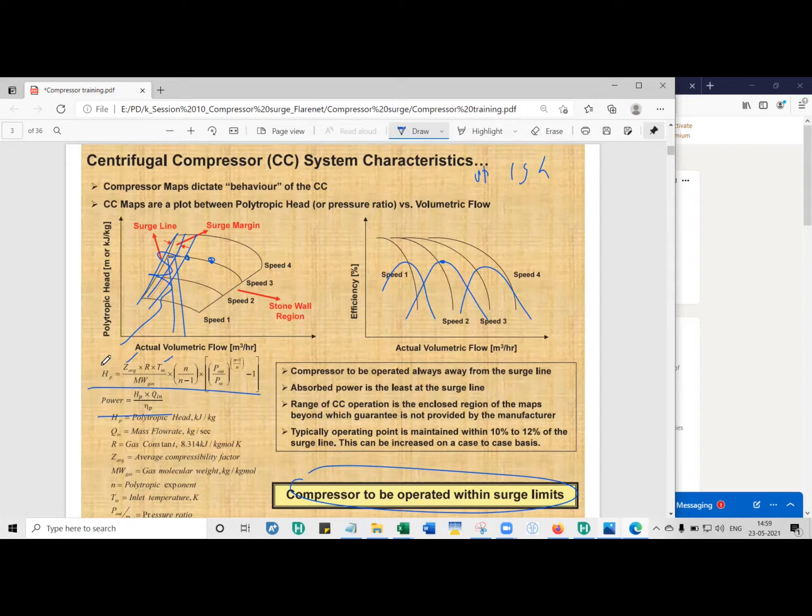With that, we can estimate what is the polytropic head. That is, how many kilojoules of energy is required to compress one kilo of gas from an initial pressure to a final pressure. So higher the polytropic head, higher is the amount of energy required.